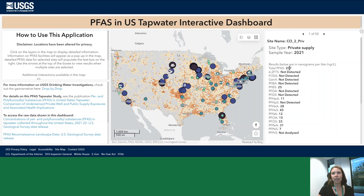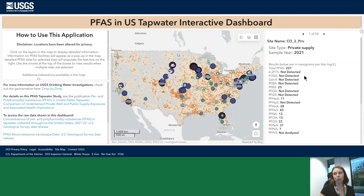The second dataset, which is represented by the gray, yellow, orange, and red hexagons, shows the number of known or reported PFAS sources in each 1500 square kilometer hexagon. This information is from the Environmental Protection Agency's PFAS analytics tool, which is linked below in the caption.